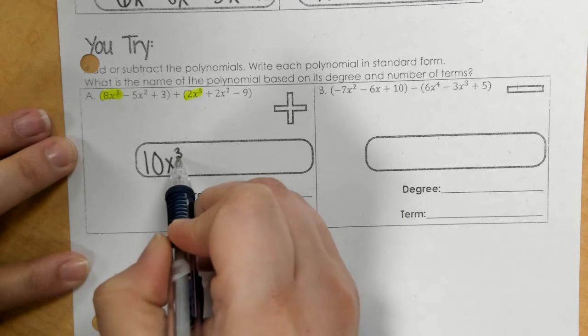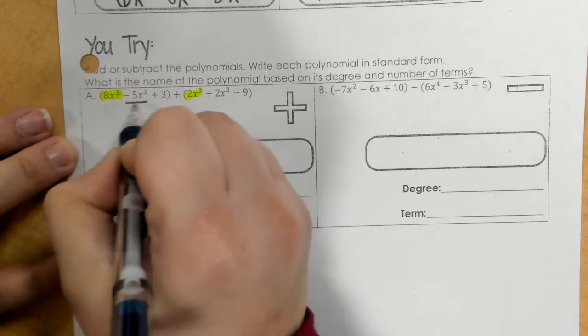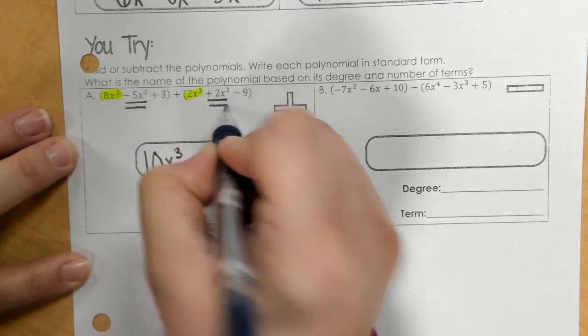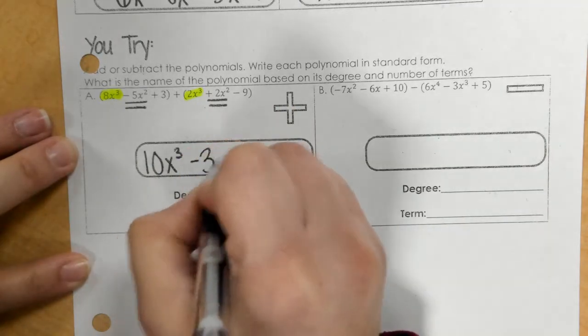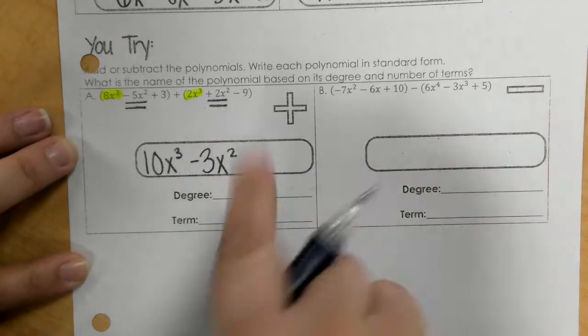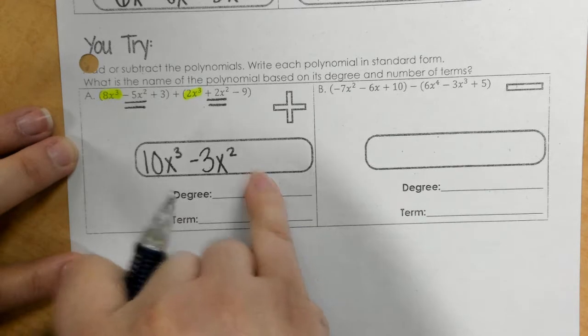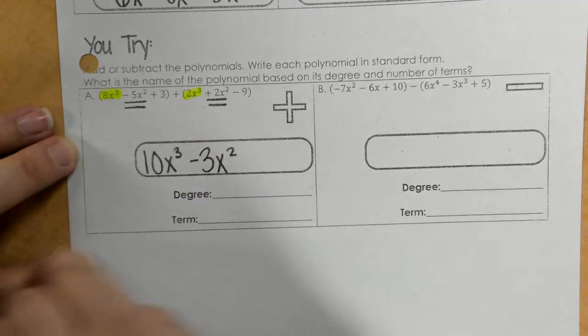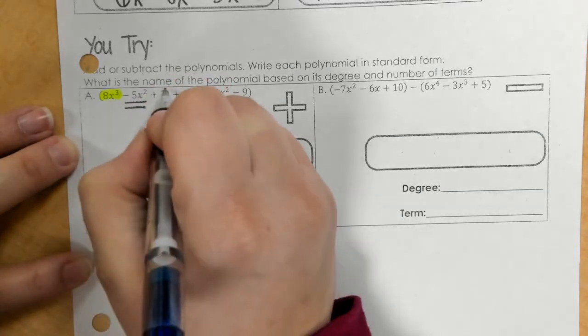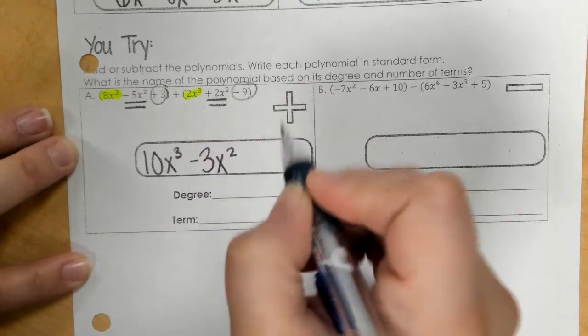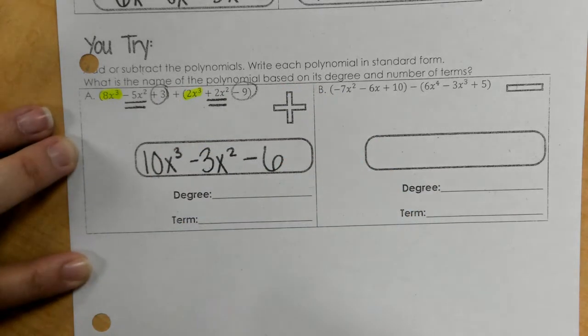Then I'm looking for an x squared. So negative 5x squared and 2x squared makes negative 3x squared. Then I'm looking for an x. And I don't have an x. So now I go to my constant, or my number. And I have 3 minus 9, which is minus 6 or negative 6.